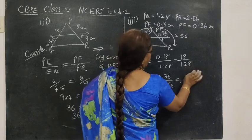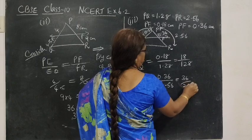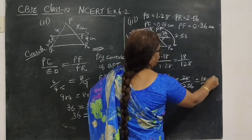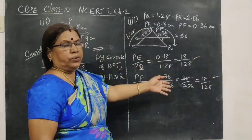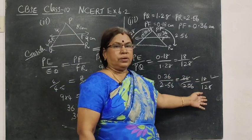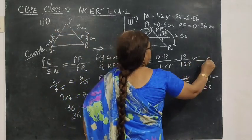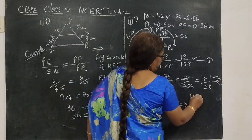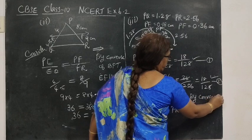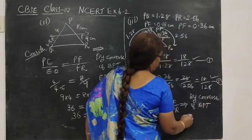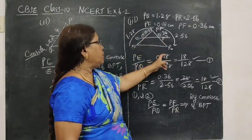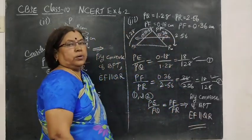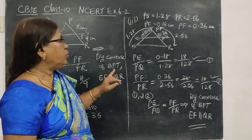No need to do further simplification. You know, because LHS equal to RHS. This you mark it as 1 and 2. PF by PR. Which implies by converse of BPT, EF parallel to QR. In basic proportionality theorem, you can do three steps. First one, then second one you are taking the whole part, PE by this full PQ, or you can take EQ by this full part.